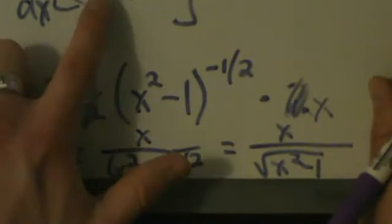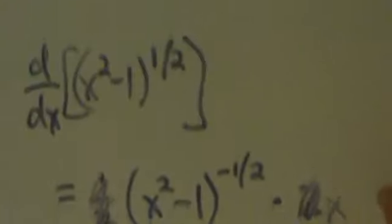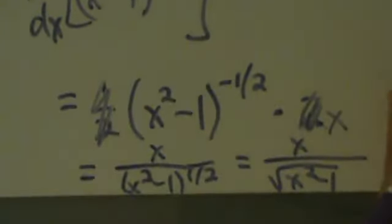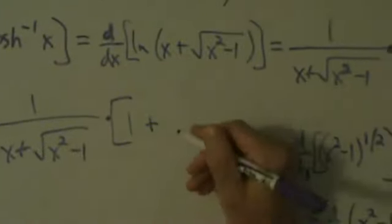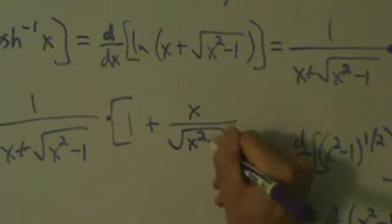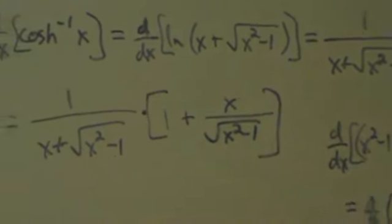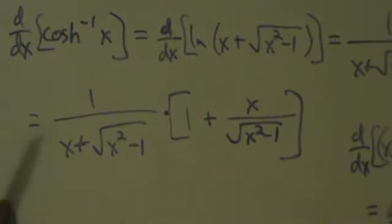If you want to see more details, check out the previous video for the inverse hyperbolic sine — it's pretty much the exact same thing, but with plus 1 instead of minus 1. So here's our result: x over root x squared minus 1 is the derivative of the second term. So that's what goes back into our expression: plus x over root x squared minus 1. Now all the same steps from the last video are going to happen.